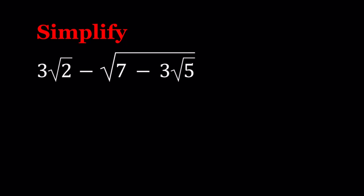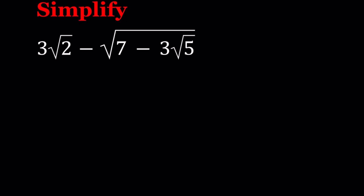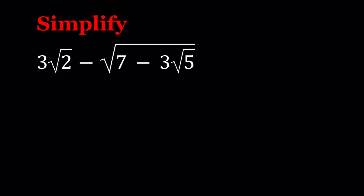Hello everyone. In this video we're going to be simplifying a radical expression in two ways. We have 3 times the square root of 2 minus square root of 7 minus 3 root 5, and we're going to simplify this expression. Let's start with the first method.